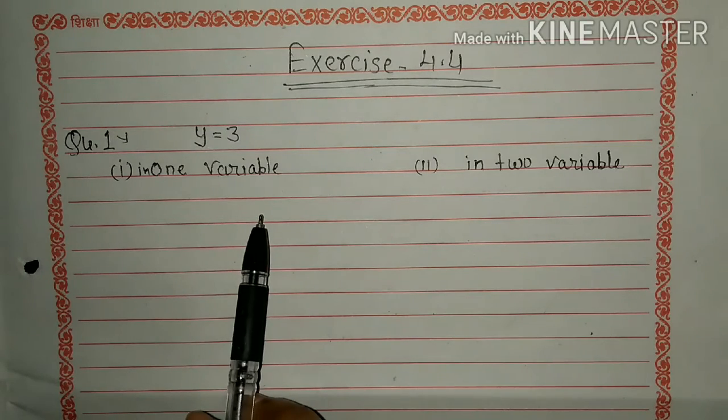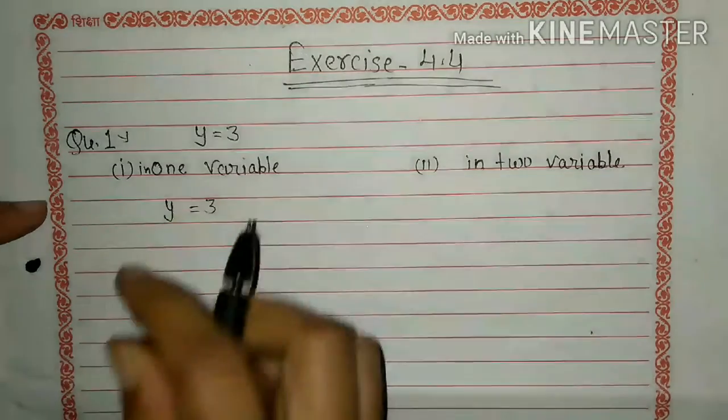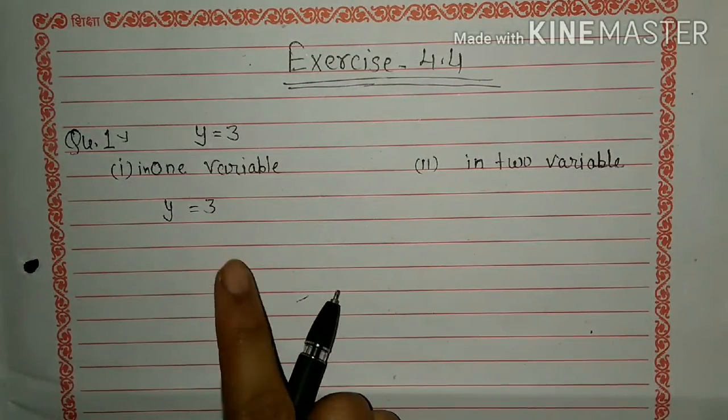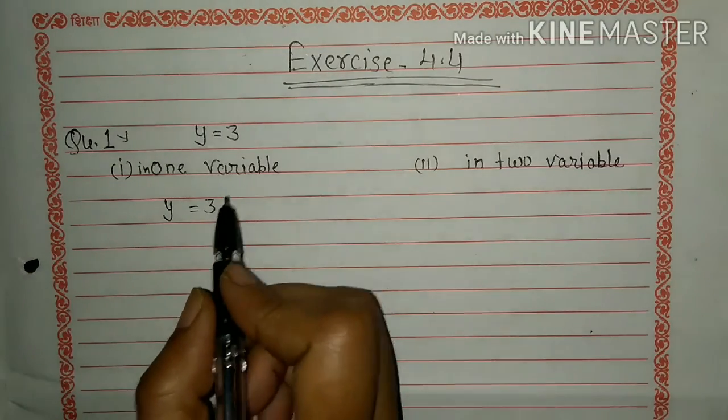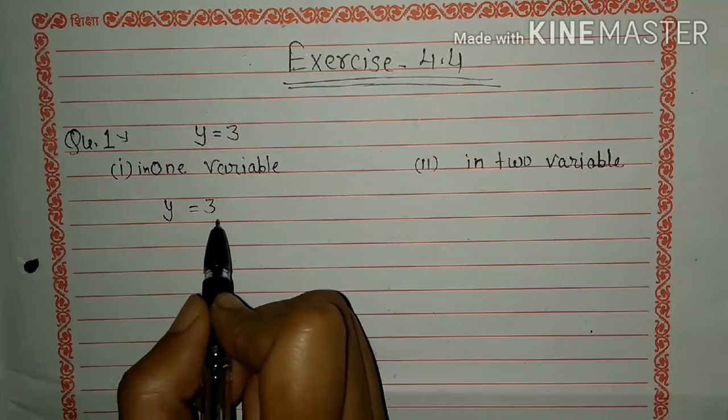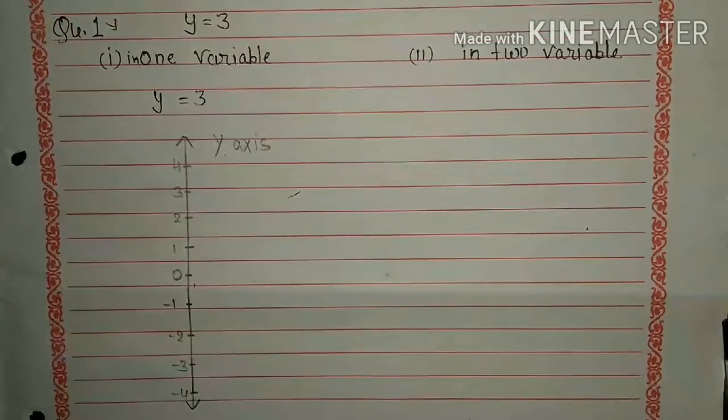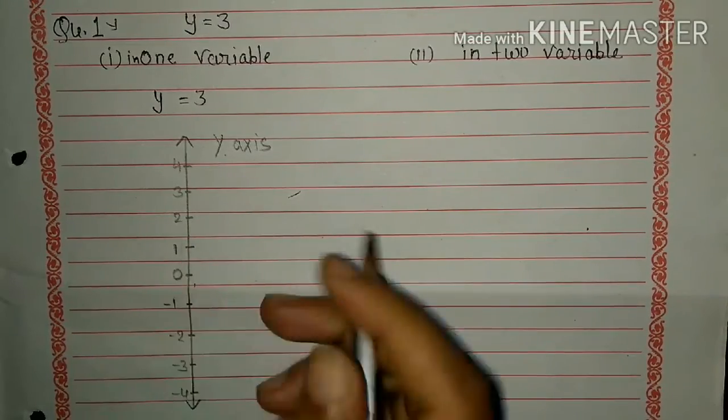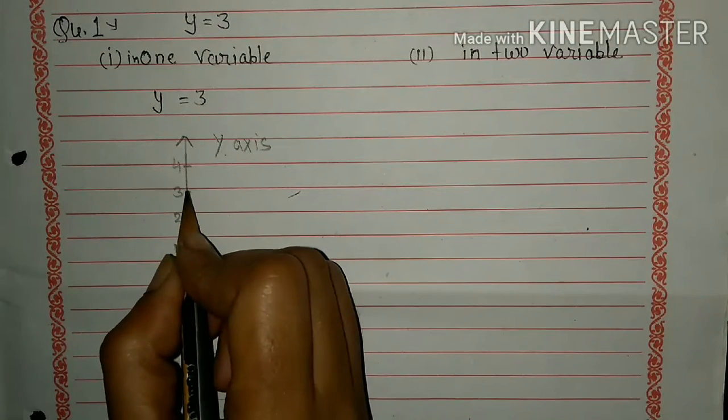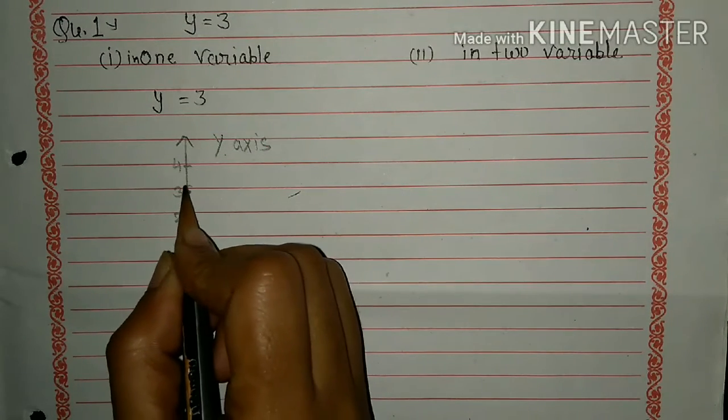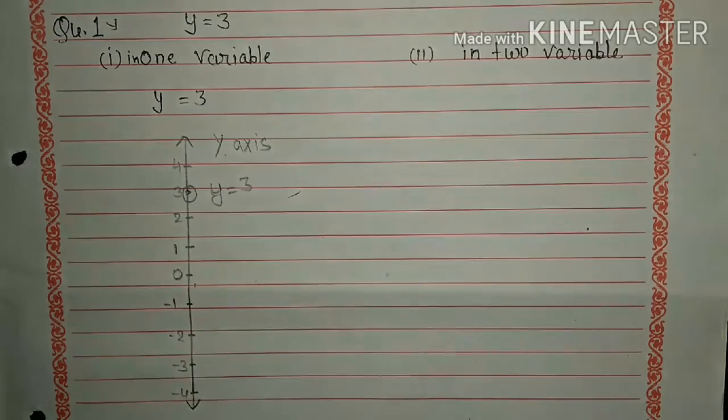So first in one variable, y=3. Here you see in this equation only one variable. So let's we represent y=3 in y-axis. So here you see y=3 in y-axis. Y=3, here is 3. So we write y=3.